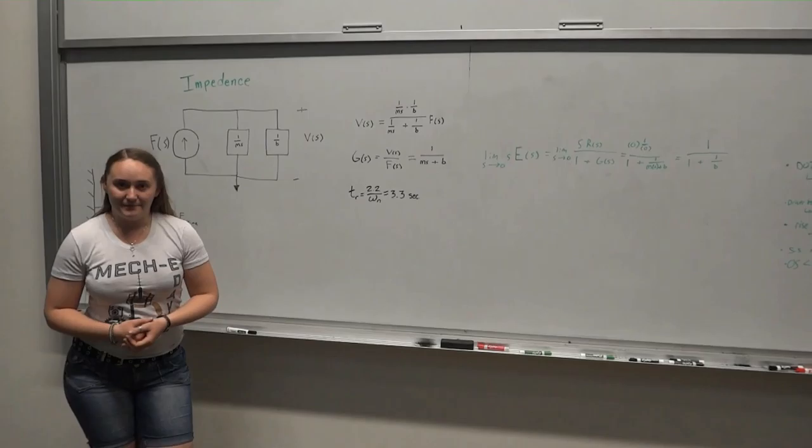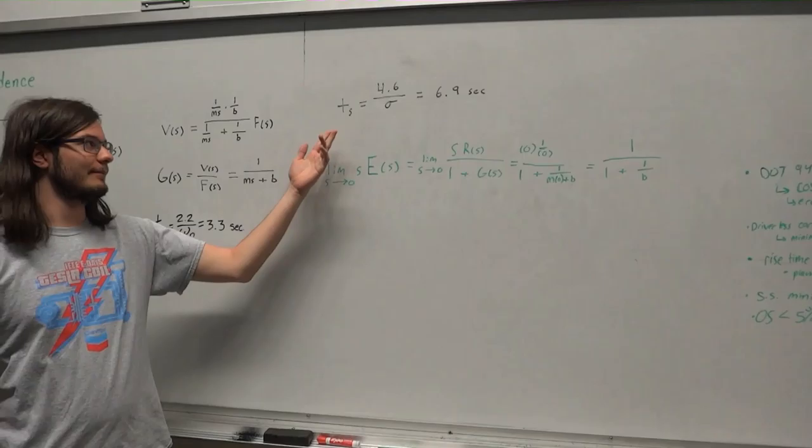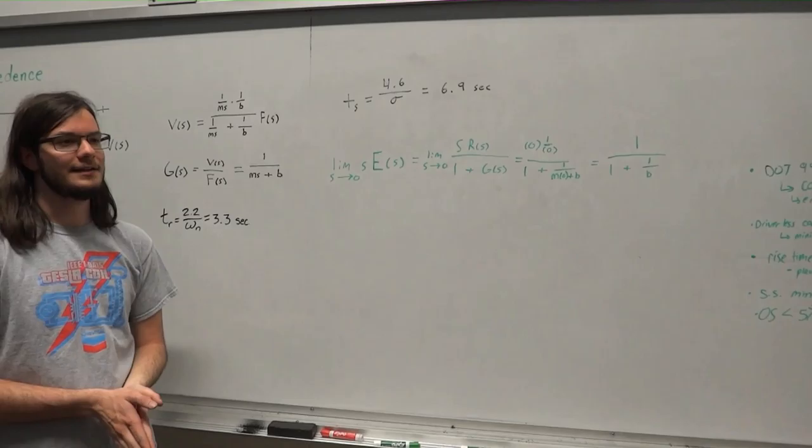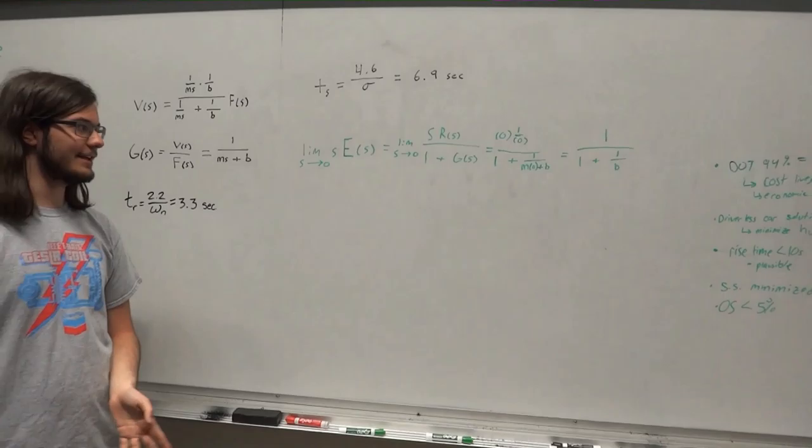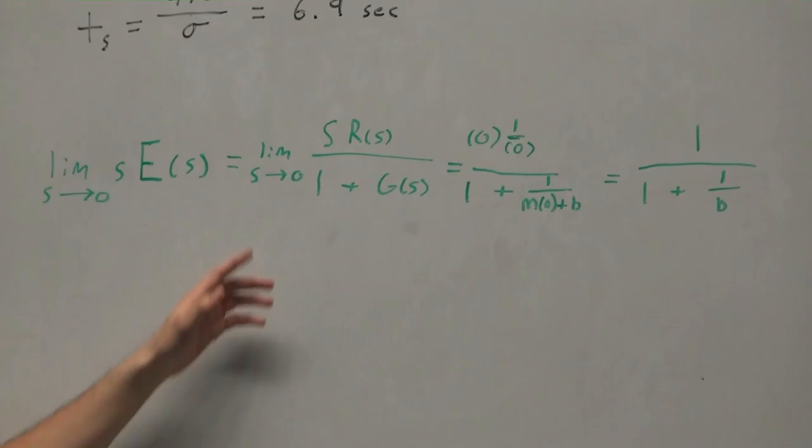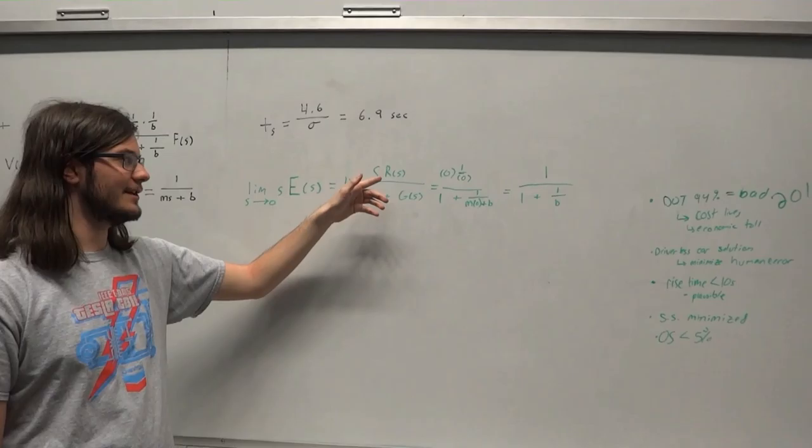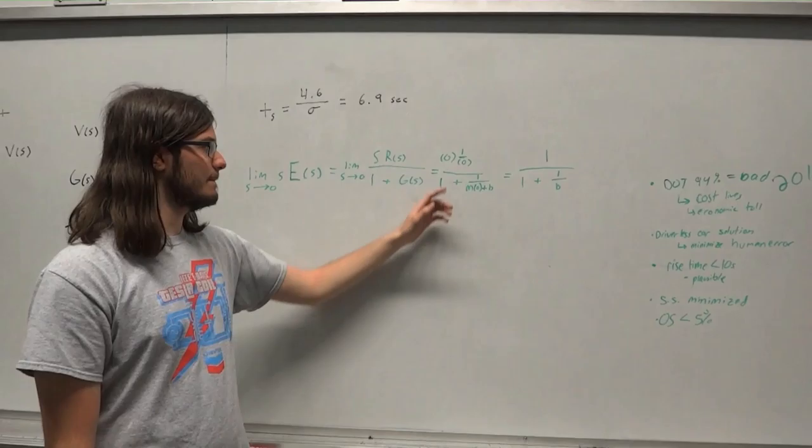Alright, so we also found that our settling time is equal to 4.6 over omega, which we found to be 6.9 seconds for our car. And then we also looked at the steady state error. So the formula for steady state error is the limit as s equal to 0 of s times the error of s, which turns into the limit of s approaches 0 of s times r of s, which is our input over 1 plus our transfer function g of s.